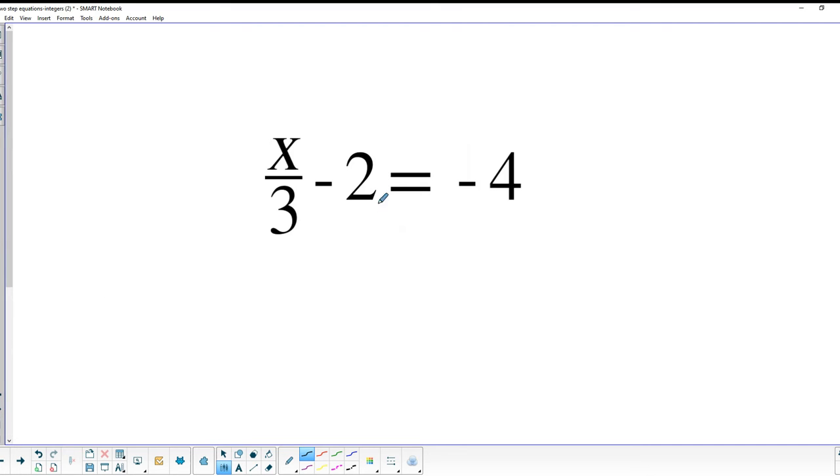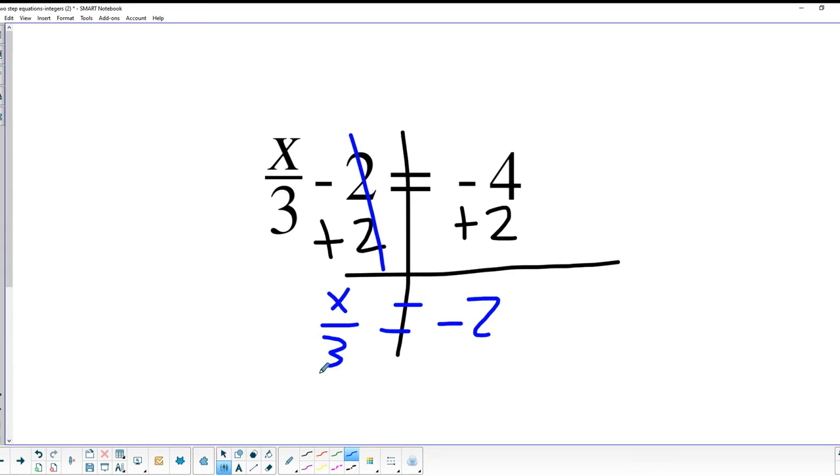Here we've got x over 3 minus 2 equals negative 4. So let's add 2 to both sides. And when we do that, we end up with these canceling out. And negative 4 plus 2 equals negative 2. And we still have x over 3 on the left side. So we will multiply both sides now by 3. And we end up with x equals negative 6. All right.